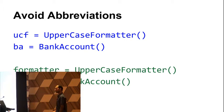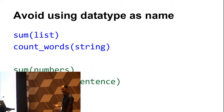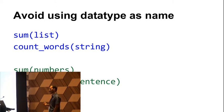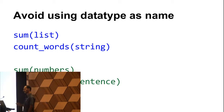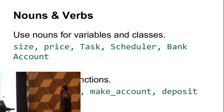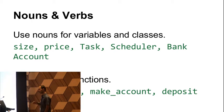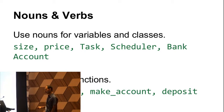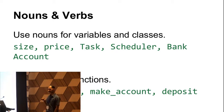Use nouns for variables and classes. When using a variable or a class, typically it is a thing that you are naming, so give it a noun — it is a size, price, task, scheduler, bank account. When you are writing a function, use a verb — get_file_size, not file_size, because that sounds like a noun. Use make_account or deposit. These are thumb rules — you don't have to follow them religiously, but they are guidelines. Consistency is also very important — when you follow one convention, stick to it throughout your program.